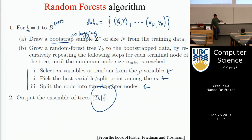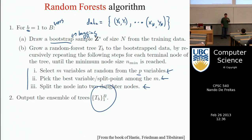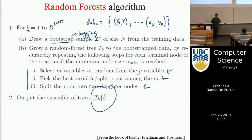The first step is to draw a bootstrap sample of your data, which means you take your dataset and sample from it with replacement. You can sample fewer endpoints or over-sample if you want. This is an additional source of randomness, beyond what is in the node optimization procedure. It encourages the trees to be different from each other, which is one of the key strengths of random forests — you want many trees that are all reasonably good predictors, but make different mistakes so that when you average them and take a majority vote, you get the right answer more often than any individual tree.